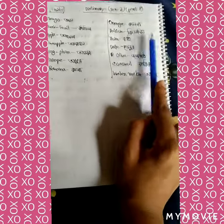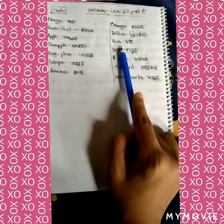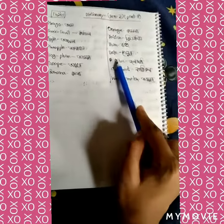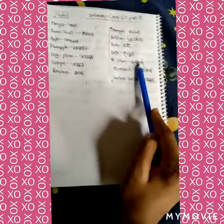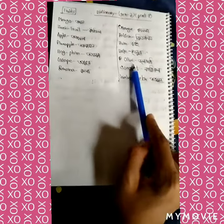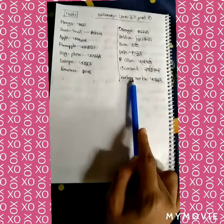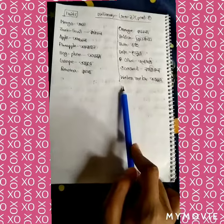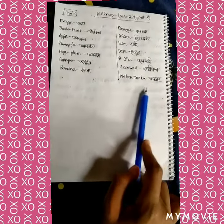Raisin is kismis, plum is boi, date is khijur, olive is jolpa, coconut is narikal, watermelon is tormuch.